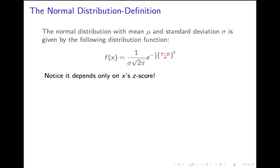First off, up in the exponent, you see x minus μ over σ, which is exactly the z-score. And that's the only place x shows up. So this distribution only depends on the z-score. The normal distribution only cares about your z-score.